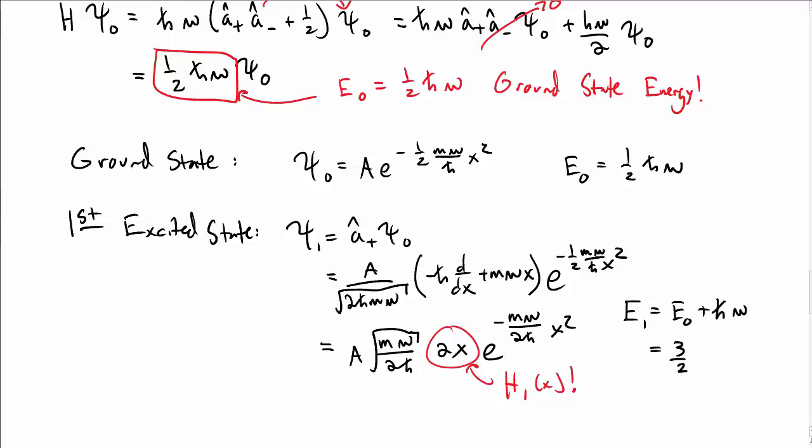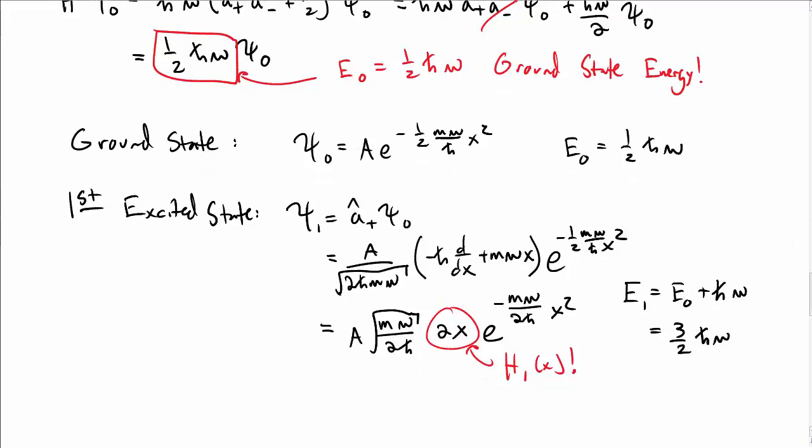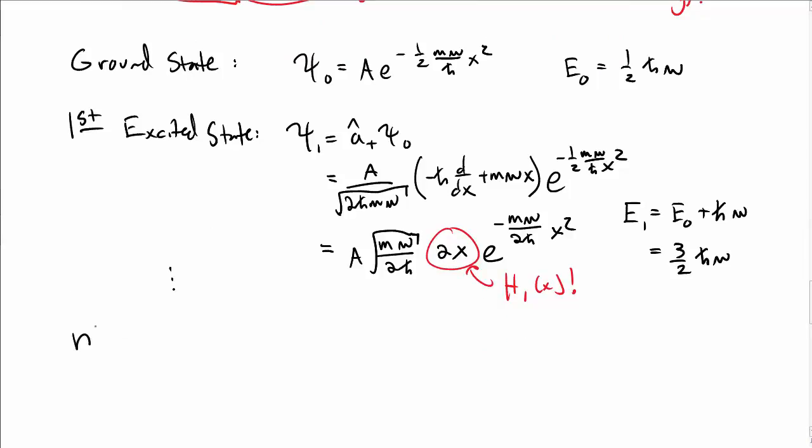The energy of this state is the energy of the ground state plus ℏω, because we operated on it with one raising operator, so it's three halves ℏω.